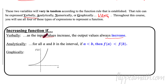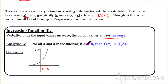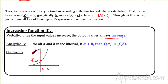Analytically means we're looking at it through a more technical lens. For all a and b in the interval, if I pick two input values a and b where a is less than b — meaning a is on the left-hand side — then f of a has to be less than f of b. For the input value a, we go up to the function and read the output f of a on the vertical axis. For input b, the output f of b is higher. So if a is less than b, then f of a is less than f of b.